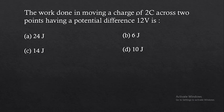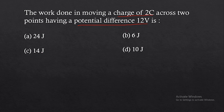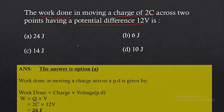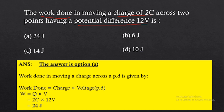The next question: the work done in moving a charge of 2 coulombs across two points having a potential difference of 12 volts is — options are 24 joules, 6 joules, 14 joules, and 10 joules. The formula is: work done = charge × voltage. So 2 coulombs × 12 volts = 24 joules. Remember: work done equals charge into potential difference.